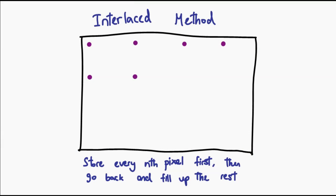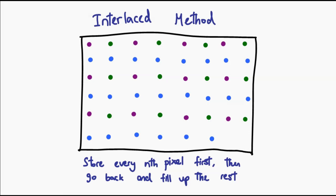Instead of storing all the pixels from top left to bottom right, PNG stores every nth pixel first. As you can see from the illustration, we start off with just a sparse grid of pixels. After covering the entire image, it goes back to fill in more of the missing pixels, and this happens over and over again until all the pixels have been loaded. To understand why that's better, let's watch a PNG image load — this is an interlaced PNG image loading on our local site limited to 50 kilobytes per second.